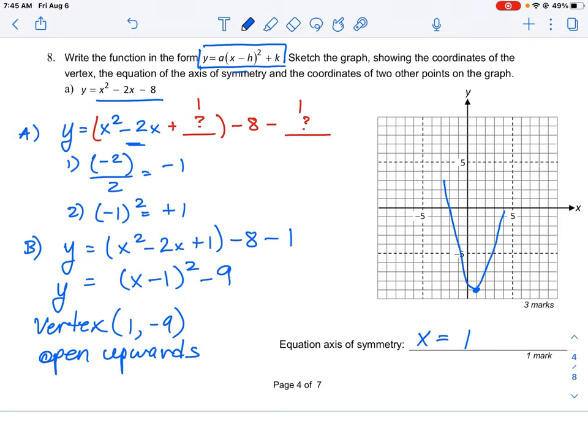You're just going to do something like this, and it goes like that. And then the axis of symmetry is equal to 1, in this case. So that's how you would approach this question for 8a.